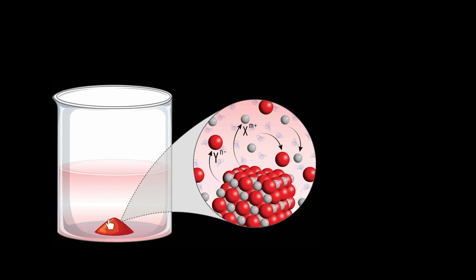Imagine a compound XY solid — X has a charge and Y has a charge. The rate at which X and Y go into solution at the surface is equal to the rate at which the ions re-precipitate back into the solid lump. This would happen with silver chloride, silver bromide, calcium hydroxide, barium sulfate, iron(II) hydroxide, iron(III) hydroxide — all those insoluble salts we've seen in salt analysis with their different colored precipitates. All those precipitates are actually solids in equilibrium with their saturated solution, with a constant dynamic equilibrium at the surface.